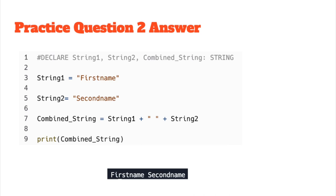Here's one possible solution: declare string1, string2, and combined_string as strings in a comment statement. String1 is your first name, string2 is your second name, combined_string is the concatenated version of the two strings plus a space. Then use the print statement to output combined_string and you should get your first name followed by your second name printed on screen. Get into a habit of declaring variables in comment statements for every program — you might get a hidden mark which could make the difference at a grade boundary.